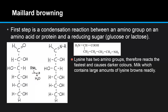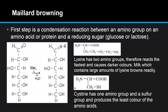We look at the reactions with lysine and cysteine. First, lysine has two amino groups — one here and one here — therefore it reacts the fastest and causes the darker colors. Milk, which contains large amounts of lysine, browns readily. Our second example is cysteine, which has one amino group and a sulfur group and produces the least color of the amino acids. So lysine produces the darkest color and reacts the fastest, and cysteine produces the least color.